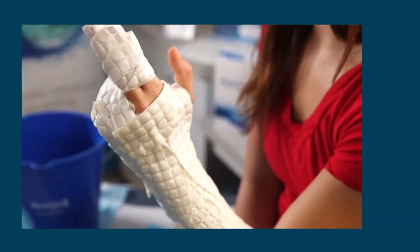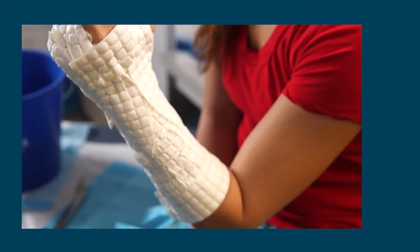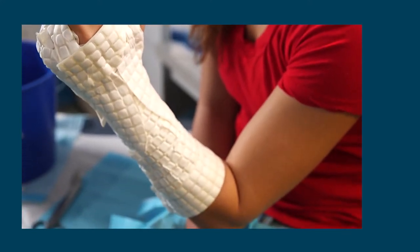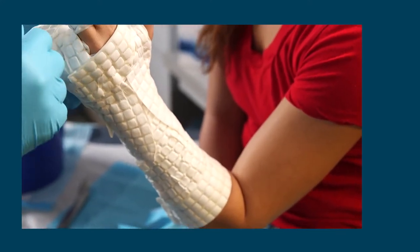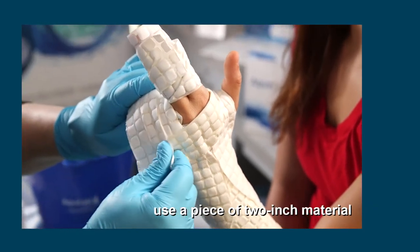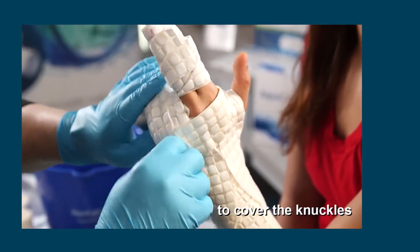Check the cast. Look for shadows and bony prominences. Use small pieces to patch them, adhesive side down. Use a piece of two inch material to cover the knuckles.